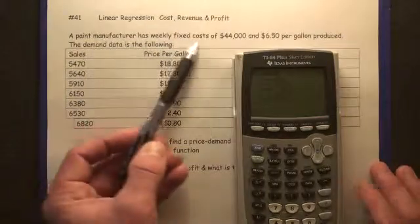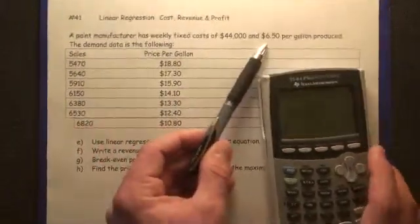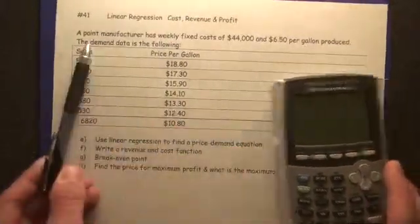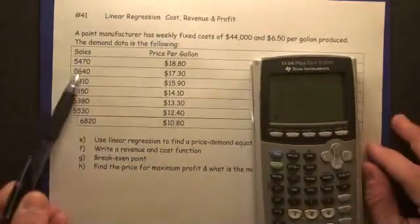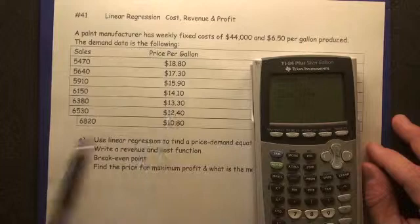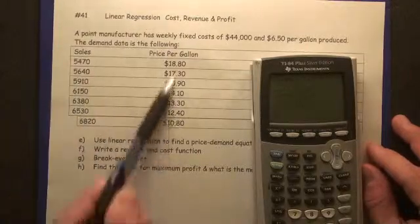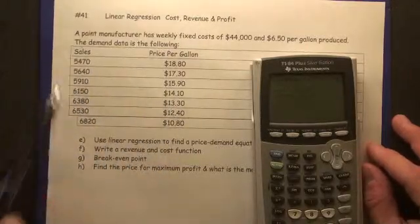Let's take a look here at a paint manufacturer's weekly fixed costs of $44,000 and $6.50 per gallon produced. The demand data is the following. Notice how the number of sales goes up as we lower the price. So this data does kind of make sense. Obviously, if you increase the price, the sales is going to go down.